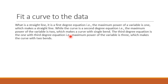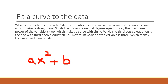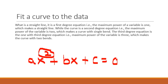A curve is a second degree equation, meaning the maximum power of the variable is 2. It is also called the quadratic equation. The formula of the quadratic equation is: ax² + bx + c = 0. This is the second degree equation — the highest power of the variable is 2.